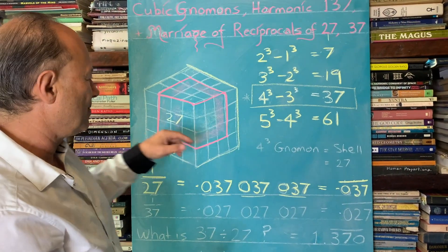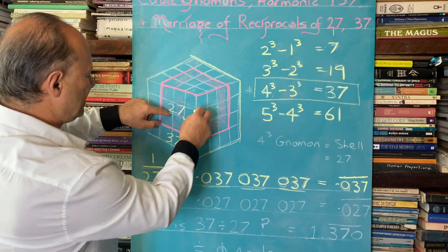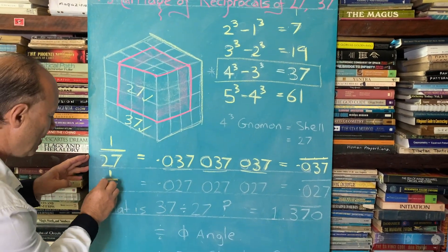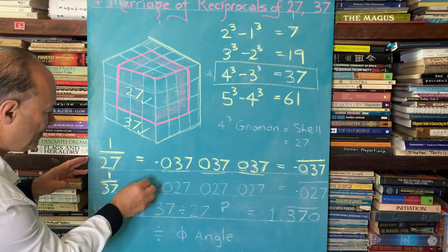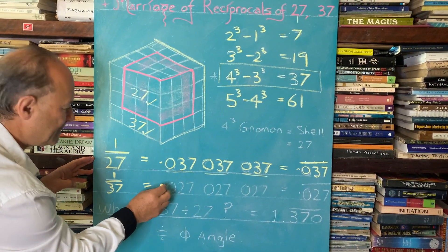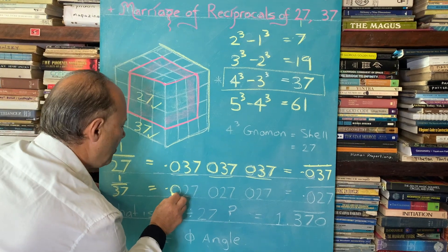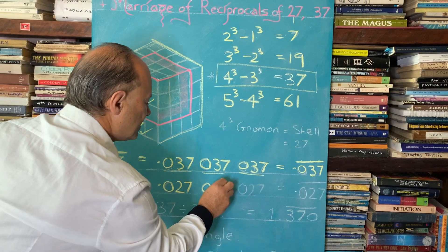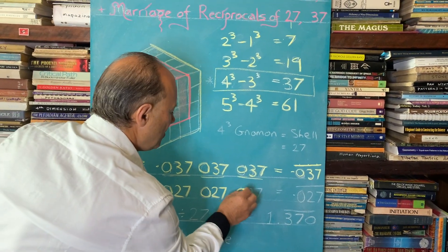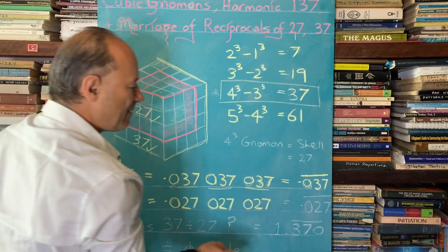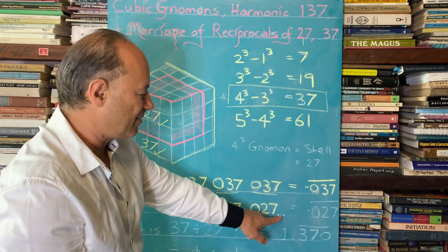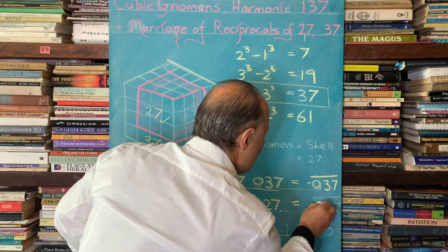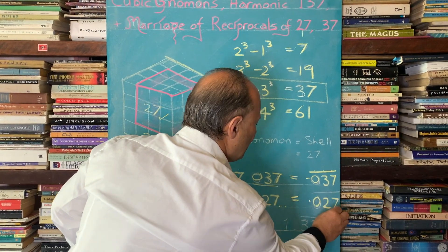Now, the other investigation is we're going to look at 37. So the reciprocal of 37 means 1 divided by 37 equals, this is the interesting bit. It's 0.027, 0.027, 0.027 forever. So you put dot, dot, dot means it goes forever. And to simplify it, it's called 0.027 repeater.